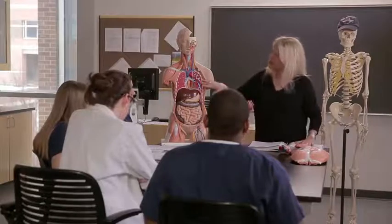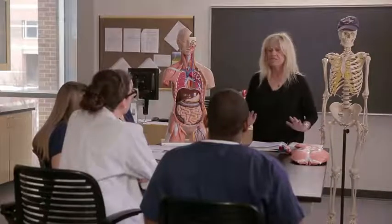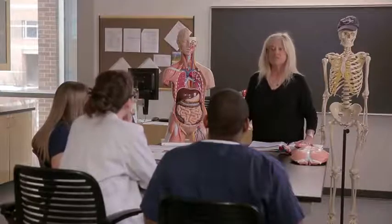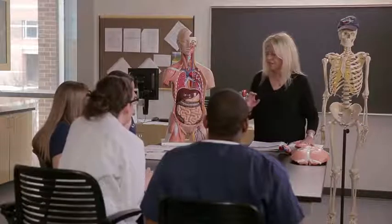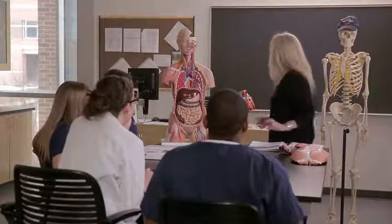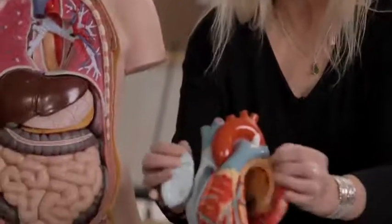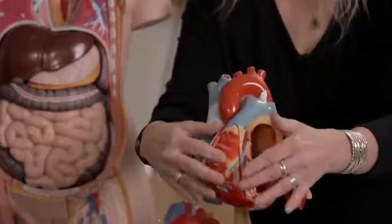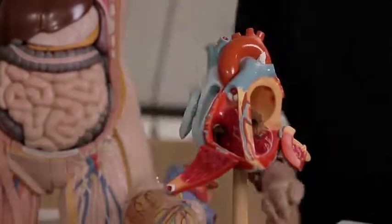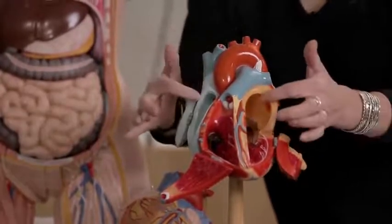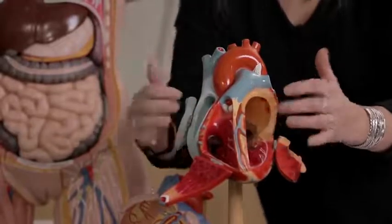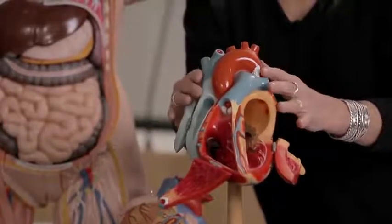Now that we know the location of the heart in the thoracic cavity, it's a good time to start thinking about the internal structure of the heart so you have a better sense of how it functions as a pumping organ. Using this model, which opens up so we can see inside, we can observe that there are four different compartments in the heart — we call those compartments chambers.